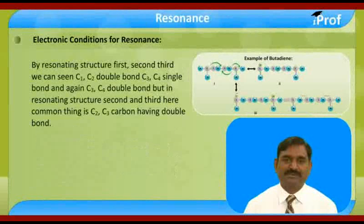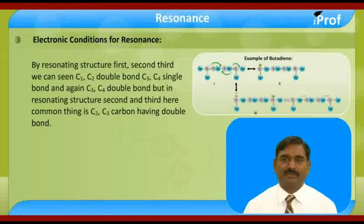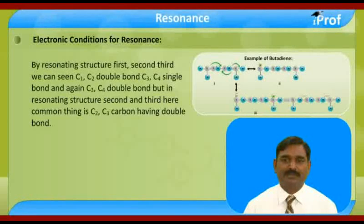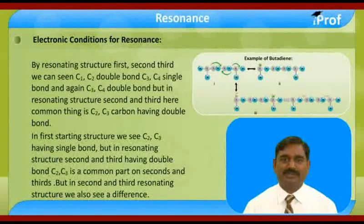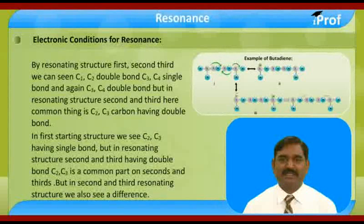By comparing resonating structures one, two, and three, we can see: structure one has C1-C2 double bond and C3-C4 double bond; in structures two and three, C1-C2 becomes a single bond. A common feature of structures two and three is that C2-C3 has a double bond, whereas in the first starting structure C2-C3 has a single bond.